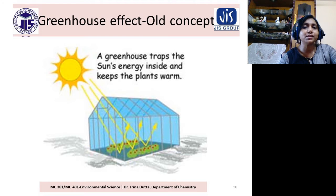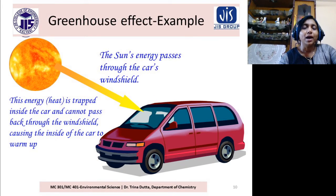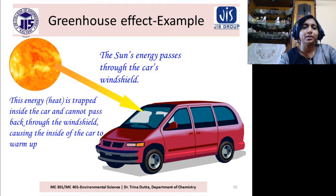As a result, plants can grow very easily. This is the old concept of Greenhouse Effect. Now in real life also we have examples. Like, this is a car and you can see the windshield.